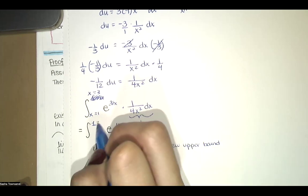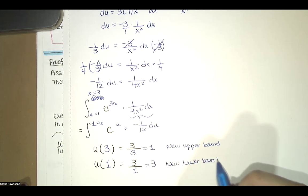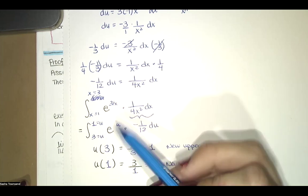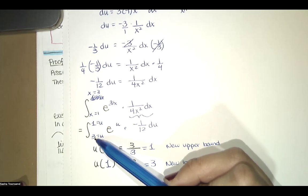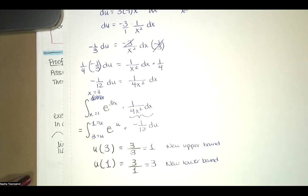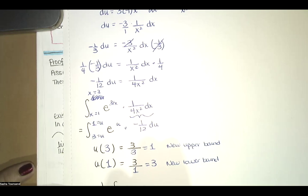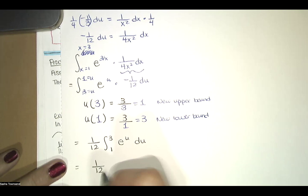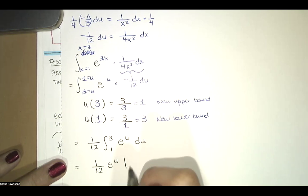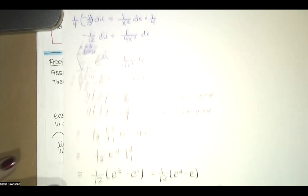When we have our integral entirely in terms of u, we're going from u equals 3 to u equals 1. We integrate negative 1/12 of e to the u. If it bothers you that the lower bound is larger than the upper bound, you can multiply by negative 1 and flip them — calling it 1/12 of the integral from 1 to 3 of e to the u du. The antiderivative of 1/12 e to the u is 1/12 e to the u. We evaluate at 3 and 1 and subtract, factoring out the 1/12 to get 1/12 times (e cubed minus e), which is our final answer.